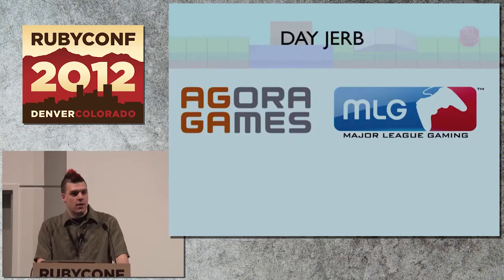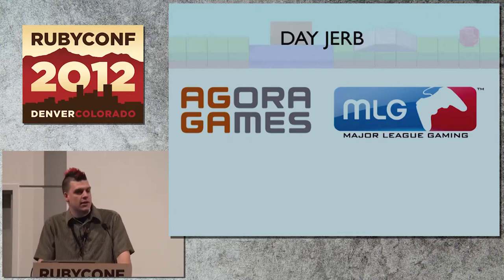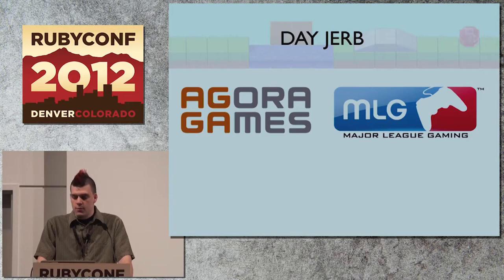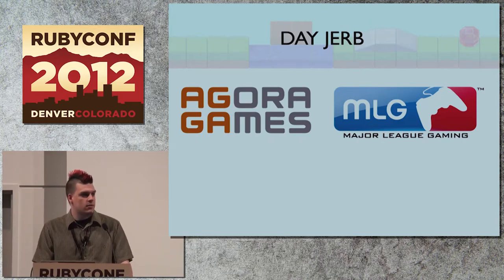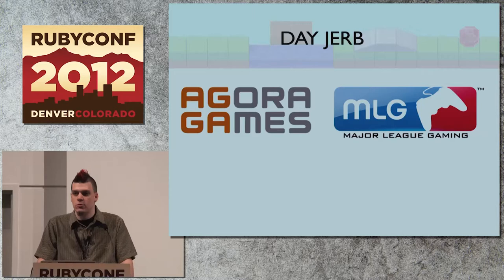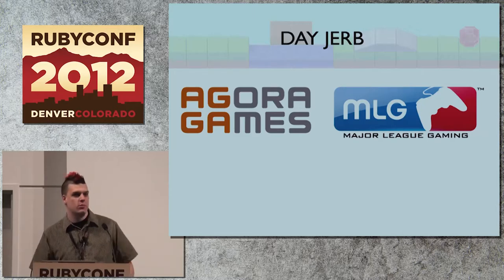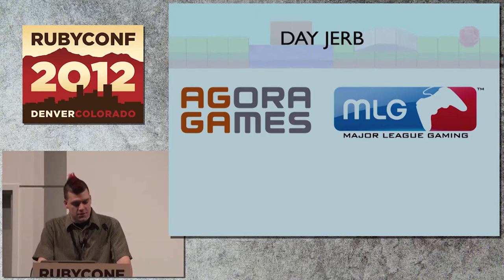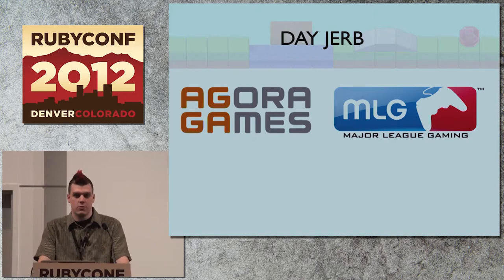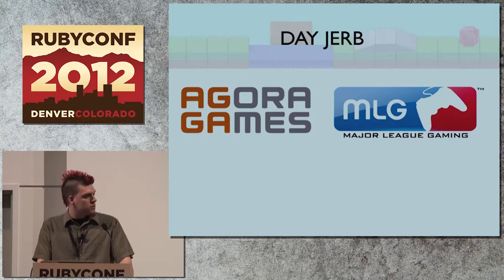My day job — I work at Agora Games, which is a game services platform for game development studios. The big thing that we do is create middleware for major and independent game development studios to handle things they don't have time for across multi-title projects — for example, leaderboards, matchmaking, community sites, statistical analysis, things of that nature. We've worked on a lot of really cool projects, some of the more notable ones including Saints Row the Third, Mortal Kombat, and Guitar Hero.